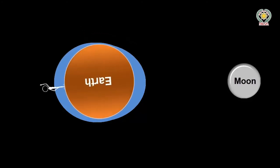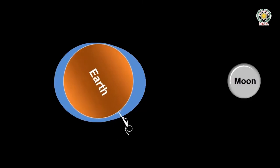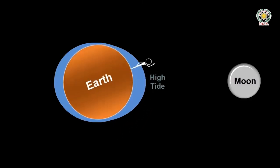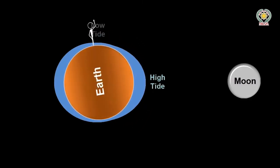Now we can see why when the Earth rotates through 24 hours it goes through two high tides and two low tides.